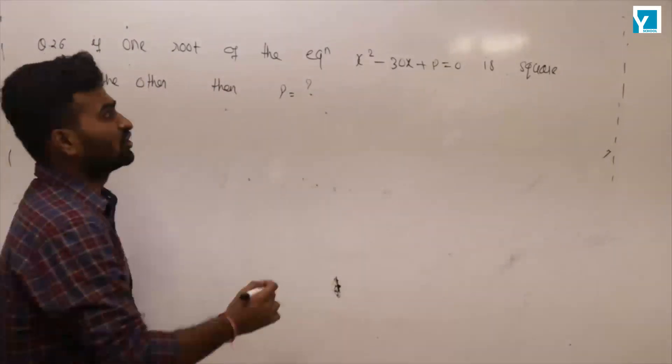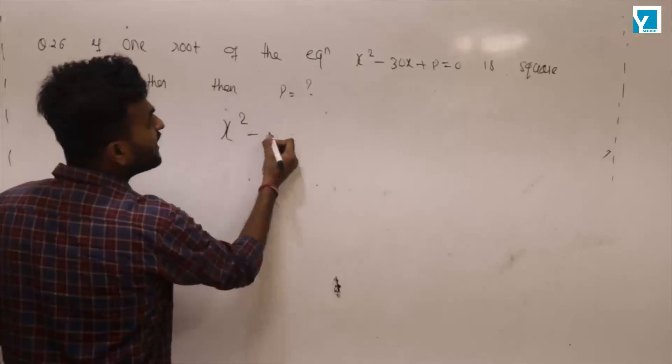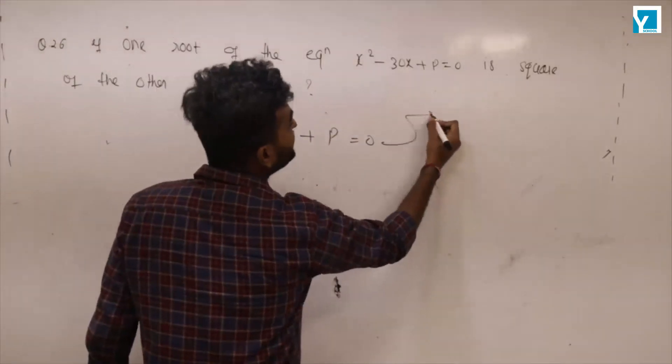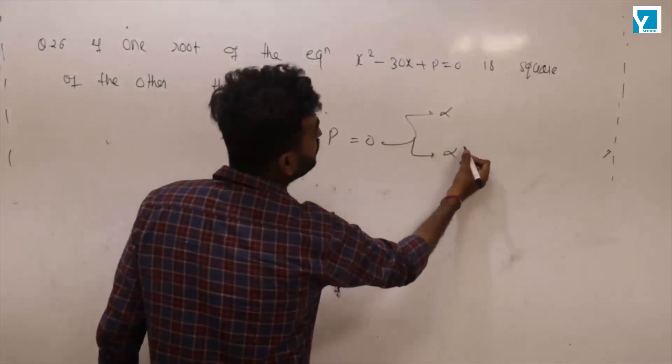x squared minus 30x plus p equal to 0. So if one root is alpha, then the other root is alpha squared.